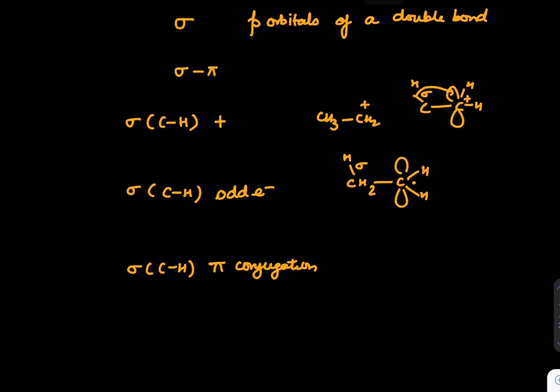Next is sigma C-H pi conjugation. What kind of compounds will lie here? Let's say we draw CH3-CH=CH2. It's a pi bond, and this structure qualifies in the scenario of sigma C-H double bond. We can draw certain structures using this. These supports we have to understand. These are all examples of hyperconjugation.